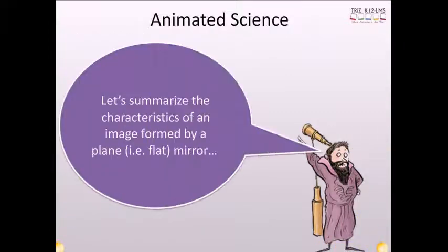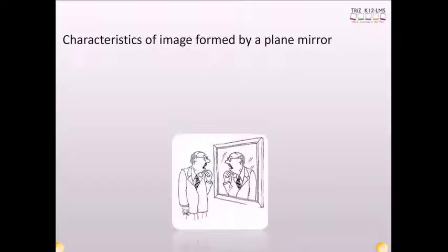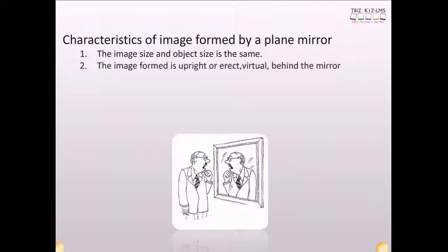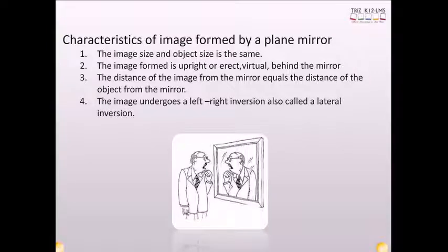Let's summarize the characteristics of an image formed by a plain, that is flat, mirror. The image size and object size is the same. The image formed is upright or erect, virtual, behind the mirror. The distance of the image from the mirror equals the distance of the object from the mirror. The image undergoes a left-right inversion called lateral inversion.